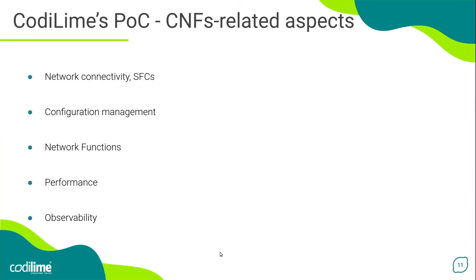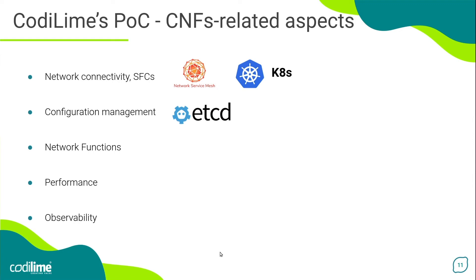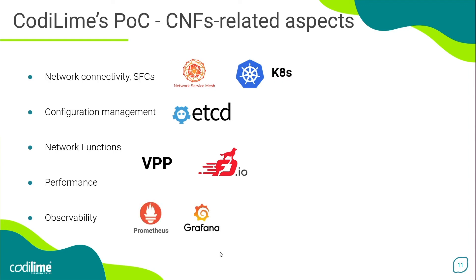Now, how do we address all those aspects within our POC? The network connectivity between CNFs for the purpose of service function chaining is realized using NSM technology, which is an orthogonal network mechanism to CNI normally present in Kubernetes. The network configuration of all CNF instances is held and centrally managed using ETCD. To provide network functions within individual CNFs, we primarily use the vector packet processing technology from the FDIO project. The use of VPP also allows us to obtain the appropriate performance for the CNFs. We use Prometheus to monitor the CNFs, and Grafana allows us to visualize the collected data.